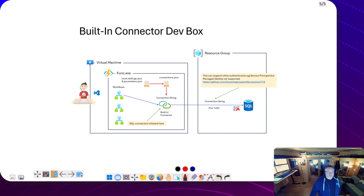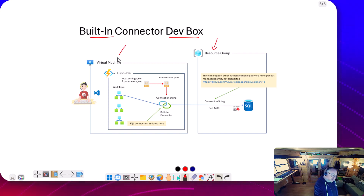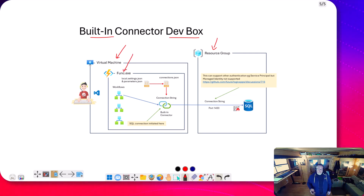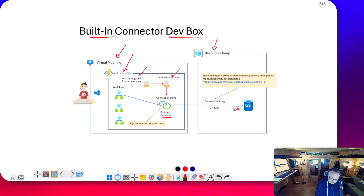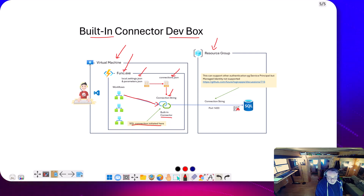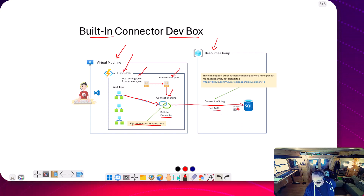The final scenario is the built-in connector but this time on the dev box. We now have the resource group over here and the virtual machine back here. My logic app code is running inside func.exe on my dev box, with the built-in connection running inside func.exe too. It's picking up settings from connections.json, parameters, and local settings. I've configured this connection with a connection string for SQL. When I trigger my workflow on my dev box, the SQL connection gets initiated from inside func.exe on my VM, making the call out to the Azure SQL database over port 1433.